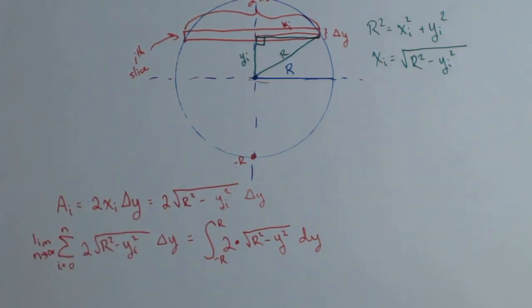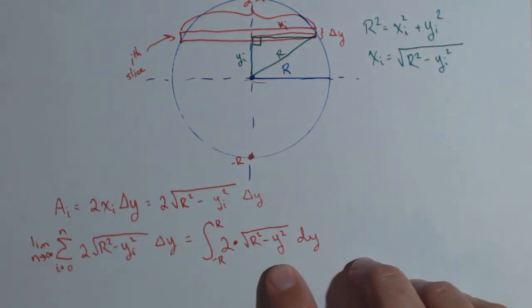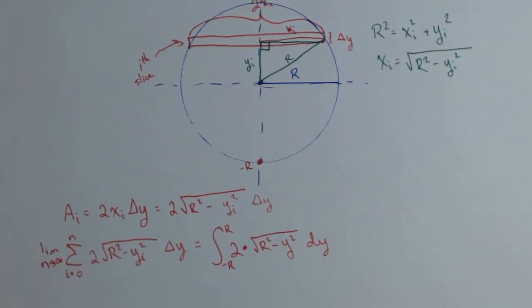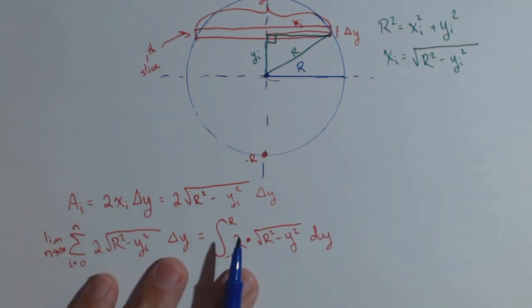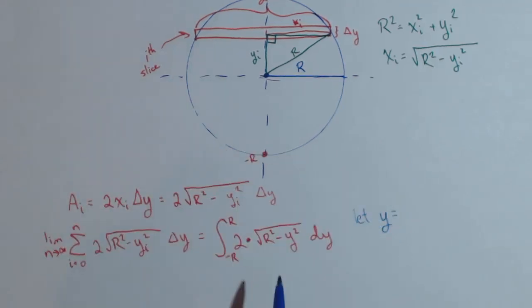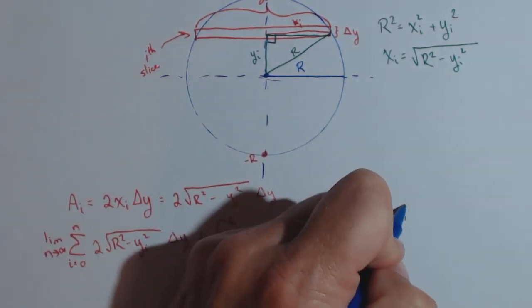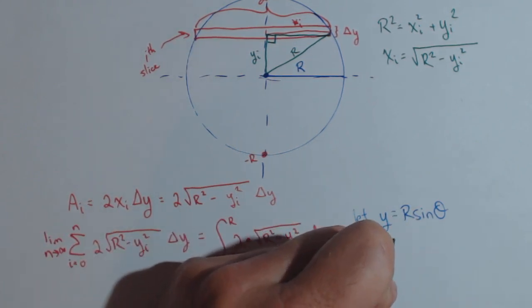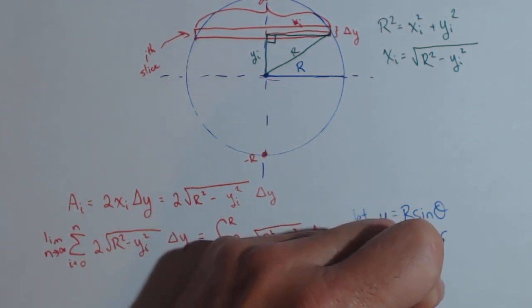This is the integral we need to solve. I'm going to get some extra paper because this could take a little bit of work. The first thing we notice is that form calls for a trig substitution. I'll solve in a different color so you can see the difference.